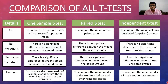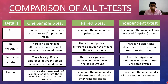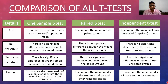For the independent samples T-test, suppose we want to compare the mean marks of male and female students. Here we have two different groups that are completely unrelated to each other. This is the comparison of all three T-tests.